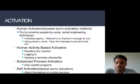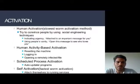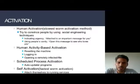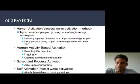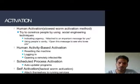Activation: human activation is the slowest worm activation method. It tries to deceive people using social engineering techniques — indicating urgency, saying 'this is an important message for you,' or using curiosity like 'open this message to see who loves you.' Human activity-based activation includes resetting the machine, logging in, or opening a remotely infected file. Scheduled process activation includes auto-updated programs. Finally, self-activation is the fastest worm activation method — the worm attaches itself to running services, such as online games or online videos.